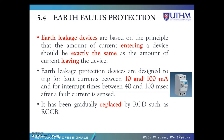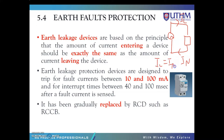Earth leakage devices are based on the principle that the amount of current entering a device should be exactly the same as the amount of current leaving the device. For example, in a simple circuit we have the live conductor and also the neutral conductor. In this system, it is normal when the current in the live conductor is equivalent to the current in the neutral conductor. The earth leakage device will check the current entering — the live conductor current — and it should be exactly the same as the current leaving — the neutral current. It will trigger when they are not equal.